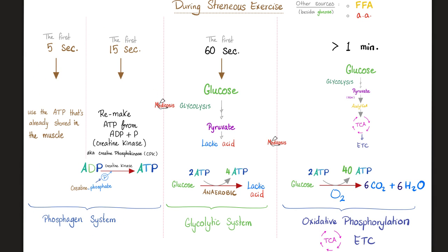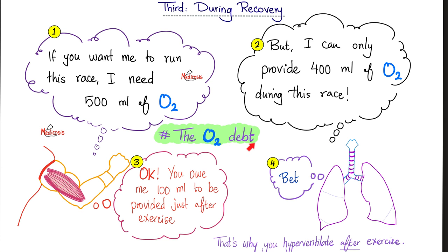If you run out of those, you switch to glycolysis to make two net molecules of ATP. If glycolysis is not enough, your muscle will switch to the Rolls Royce of metabolism — oxidative phosphorylation, i.e. the TCA cycle and electron transport chain — giving you a net 38 molecules of ATP. The story of the oxygen debt was mentioned in previous videos.